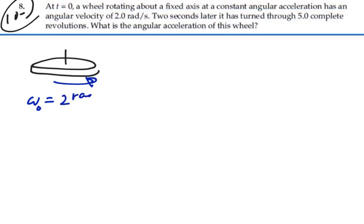Then we know it goes through two seconds and completes five complete revolutions. A revolution is a measure of angle. So when we're talking about five revolutions, we're talking about our angular displacement. So we have five revolutions.